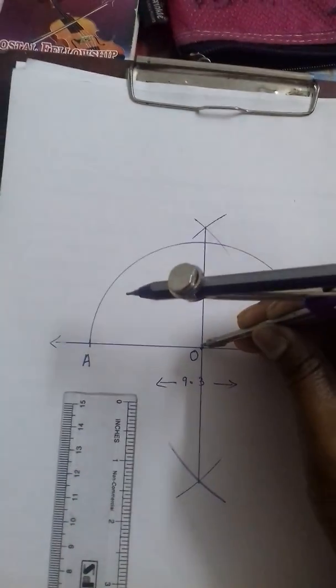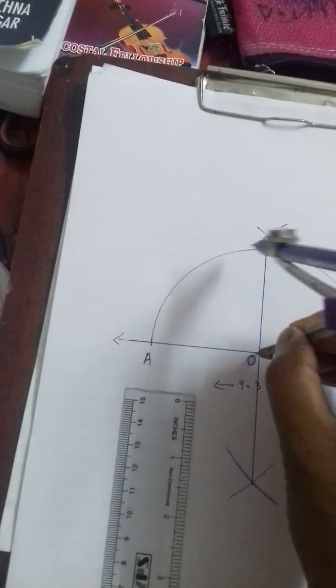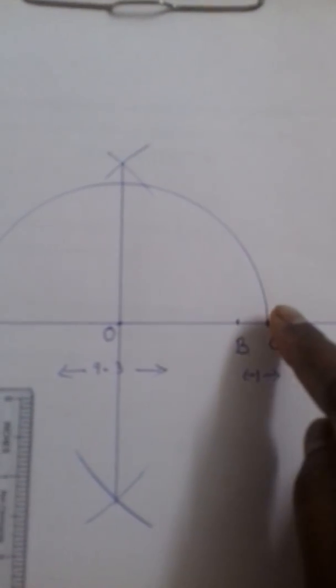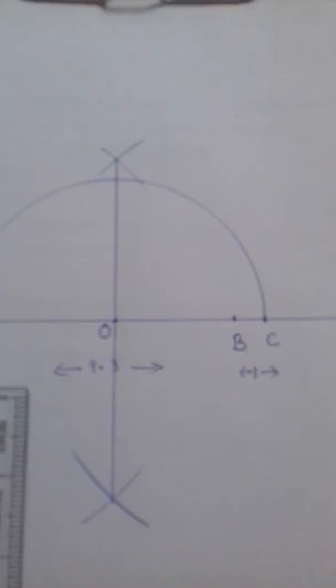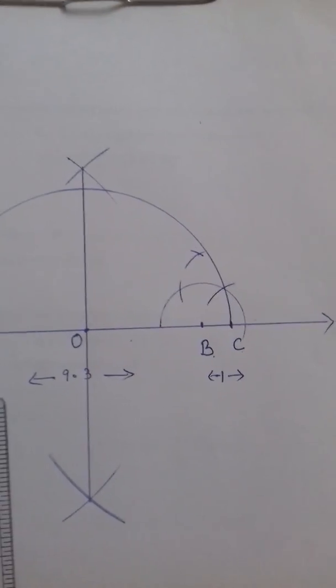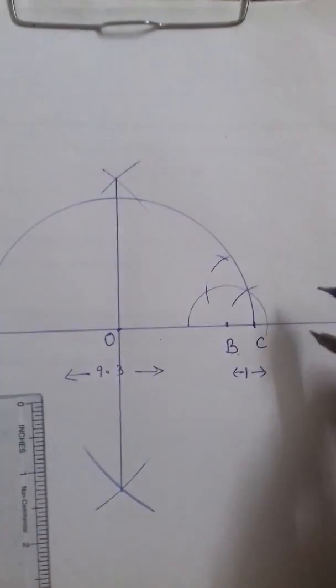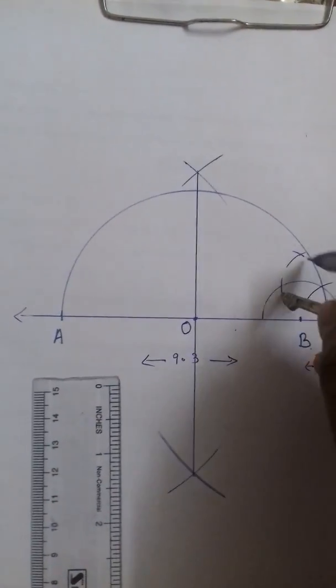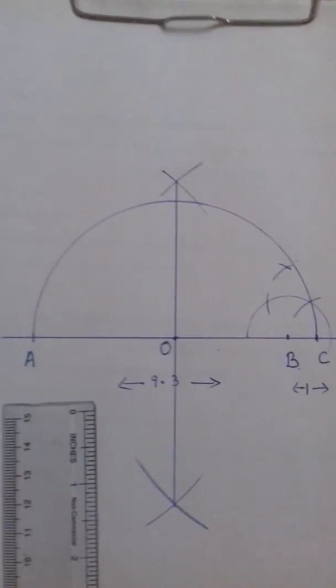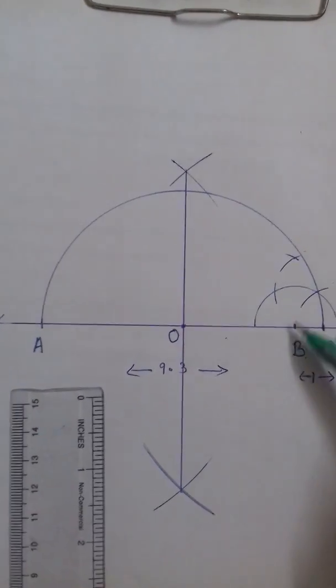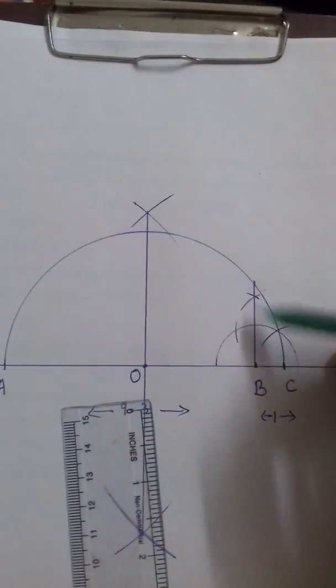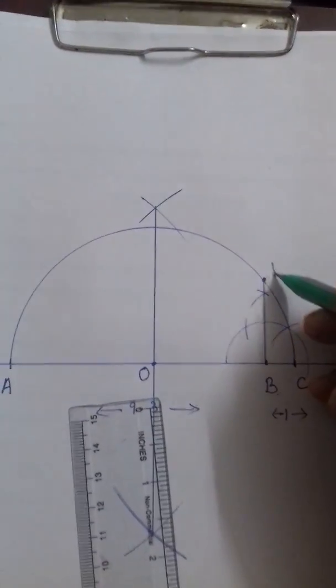With centre O and OA as radius, draw a semi-circle. Now at B, draw a perpendicular which will meet this semi-circle at a point D. So at B, I have drawn a semi-circle. From this point draw arcs and from here draw an arc and from here intersect it and join this intersecting point with B and extend it to touch the semi-circle at D. So this point is joined and extended to touch the semi-circle at D.